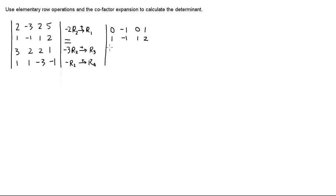Now let's do the next row. Negative three times one is negative three, plus three is zero. And negative one times negative three is positive three, plus two is positive five. Then one times negative three is negative three, so this one becomes negative one because we add two. And two times negative three is negative six, plus one, giving negative five.